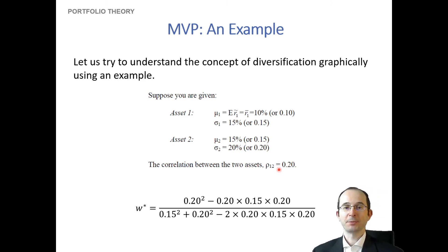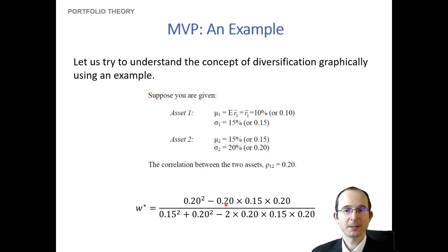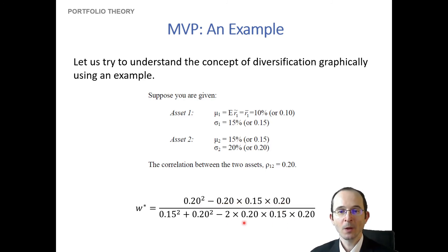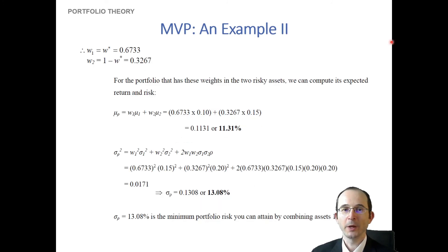Using our optimal calculus-derived rule, the weight on the first asset is equal to the variance of the second asset minus the product of the standard deviations of the two times the correlation, divided by the variance of the first plus the variance of the second minus two times the product of their standard deviations times the correlation. Calculating this expression gives a weight of 0.67 on the first asset and therefore 0.33 on the second.